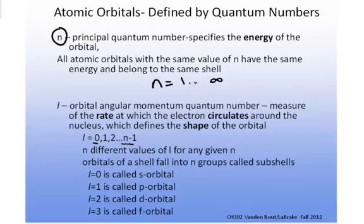There's N different values of L for any given N. These orbitals of the shell fall into N groups called subshells. When L is equal to the numerical value of 0, it's called the S orbital.